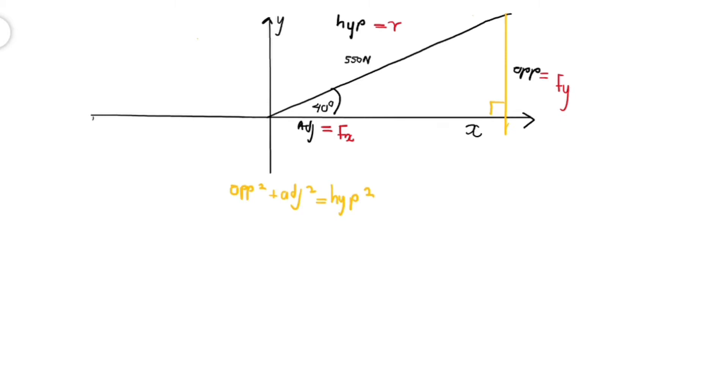The first one that I'm thinking of is sine 40, which is the angle, can be equated to the opposite side over the hypotenuse. Cosine 40 can be equated to the adjacent side over the hypotenuse. Tangent of the angle, which is 40, can be equated to opposite over adjacent.